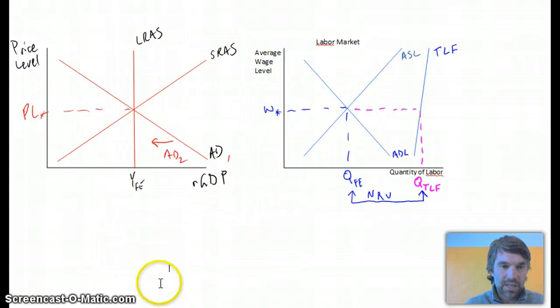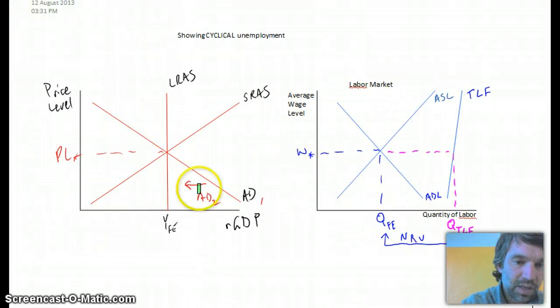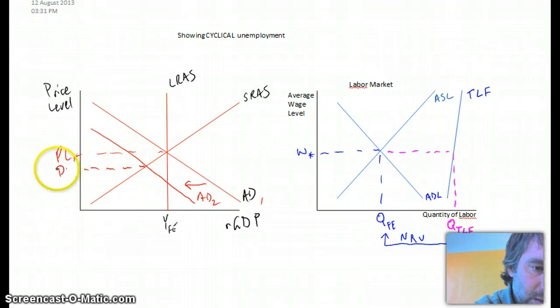So we're going to revisit our aggregate demand aggregate supply diagram, and here we're going to show a shift to the left of aggregate demand. Now there's all sorts of reasons that could have happened. You guys know what those are. Any change in any of the components of aggregate demand would cause that. Now the shift in aggregate demand is going to be accompanied by a temporary fall in price level, and obviously we're going to produce less stuff.